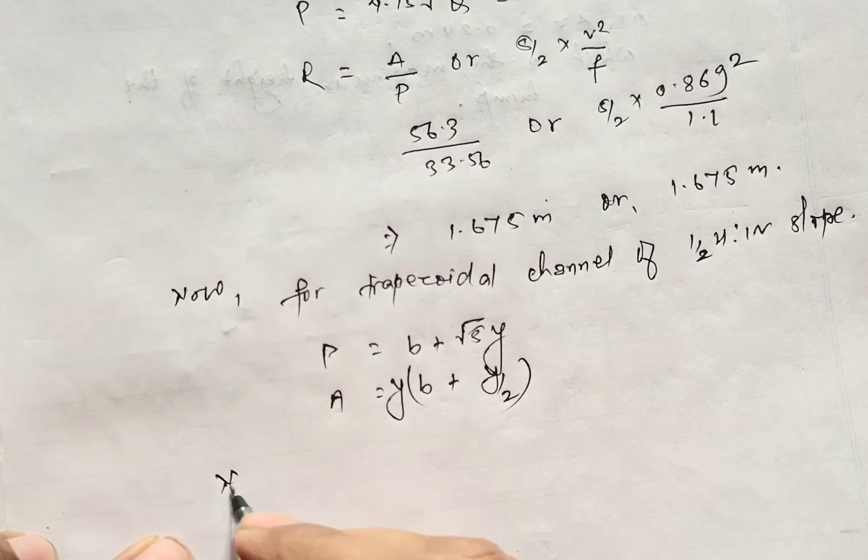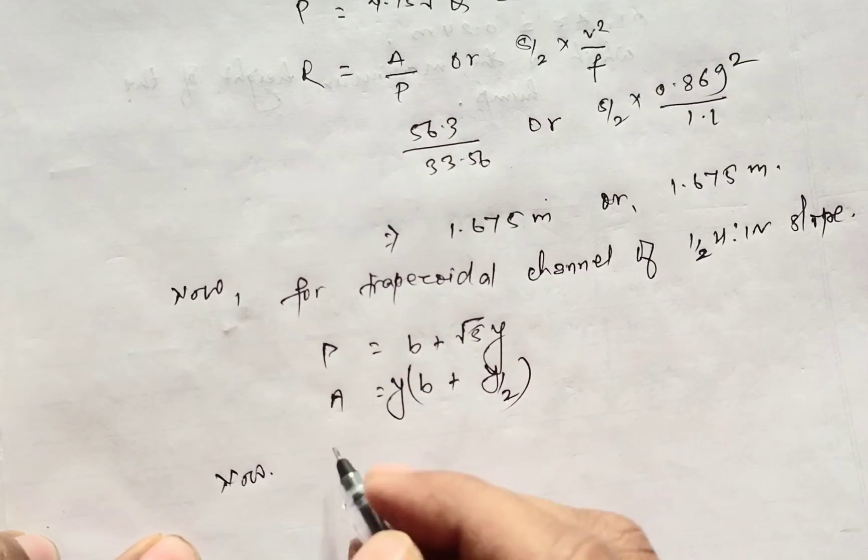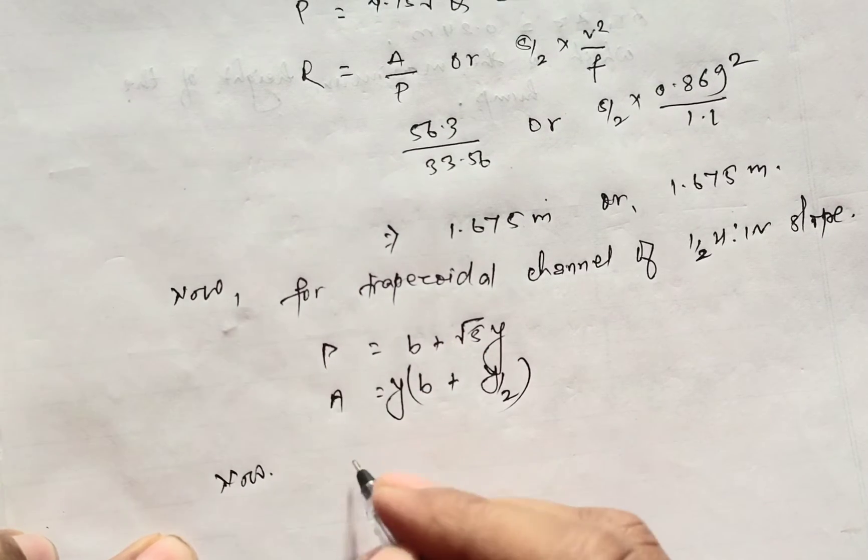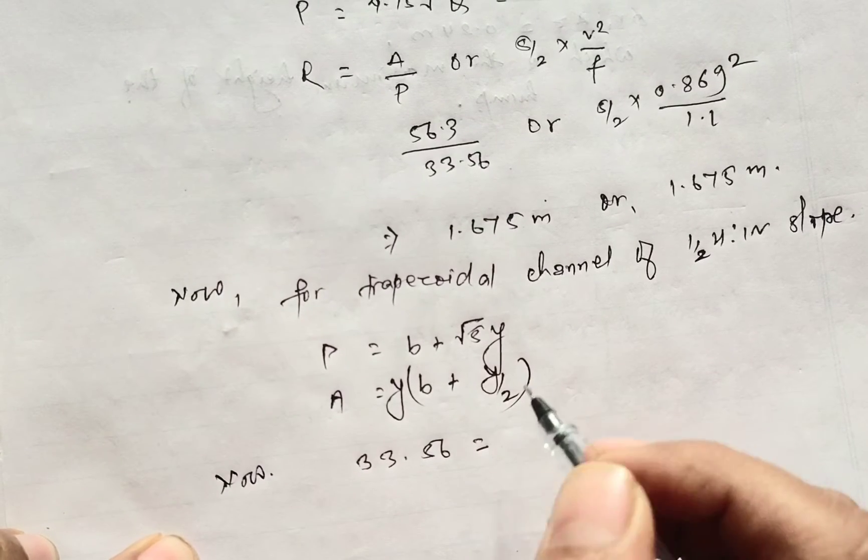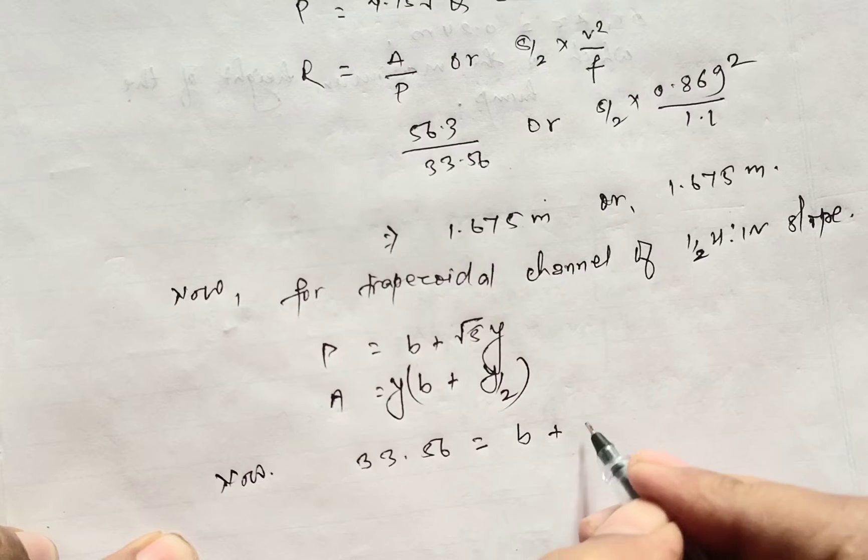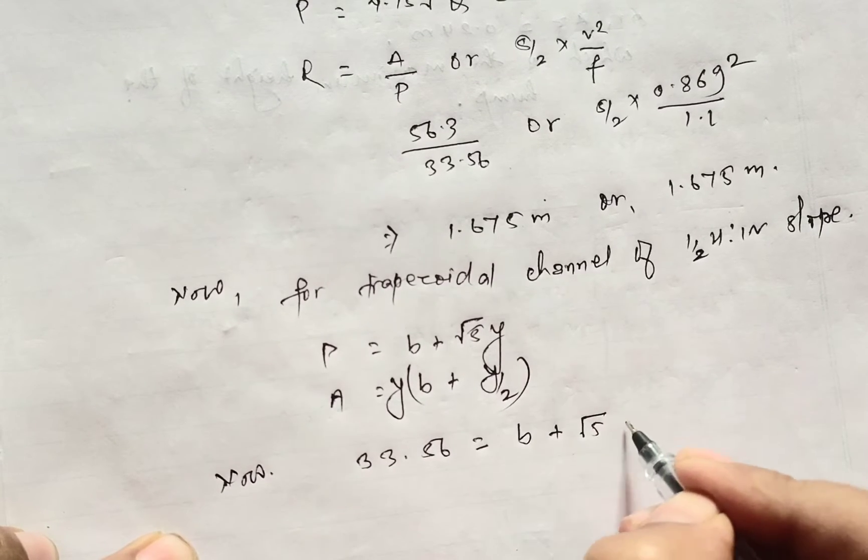Now placing the values mentioned above, the perimeter P which is already calculated as 33.56 equals the value of B plus root over 5Y.